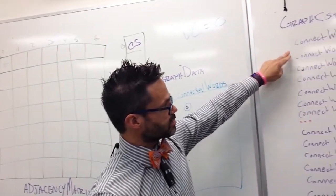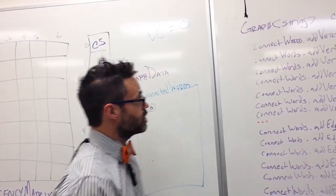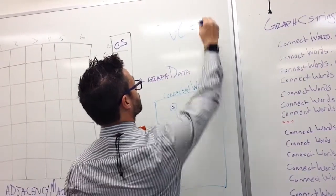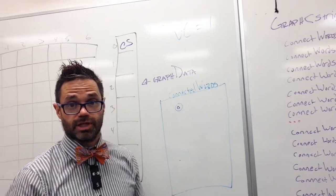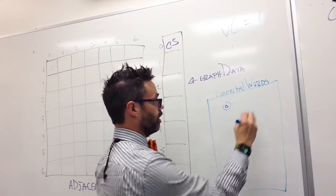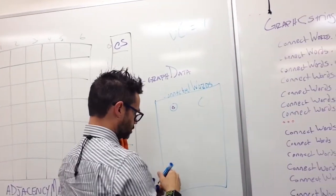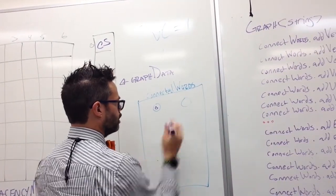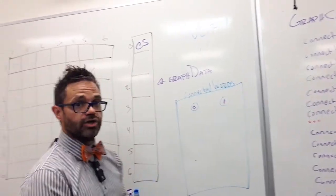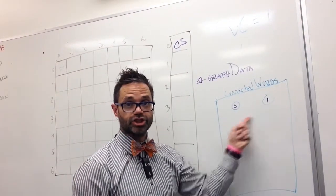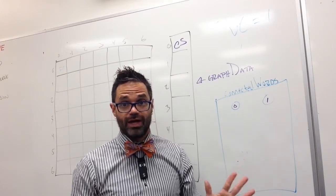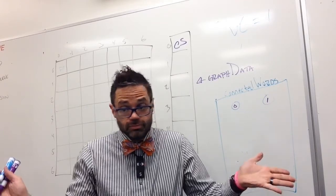We're going to repeat that process and add some more vertices. Our vertex count went up to one because we incremented it. Now I'm going to go to vertex one and draw that — its number is one. Notice on my graph right here, there's no relationship yet between the actual two values. There are only just vertices that exist. They have no edges connecting them. They're just points.